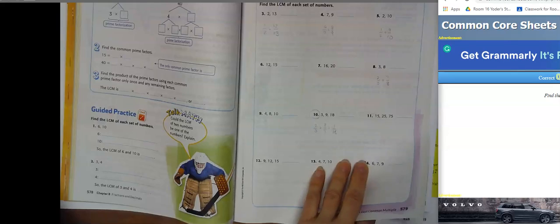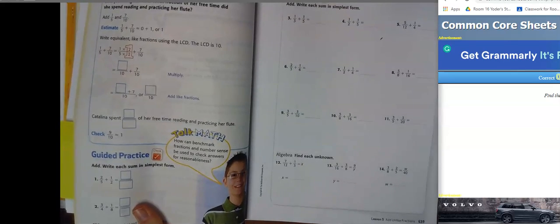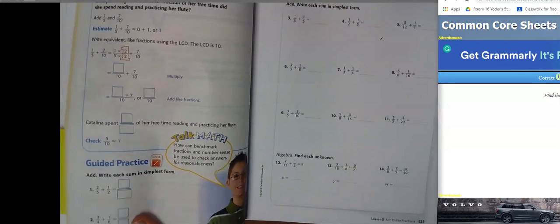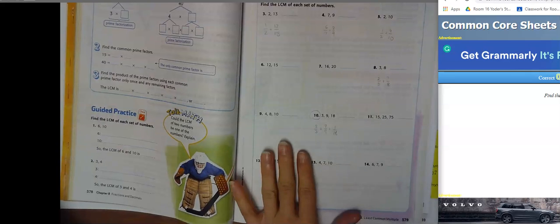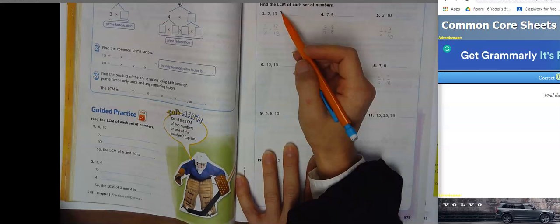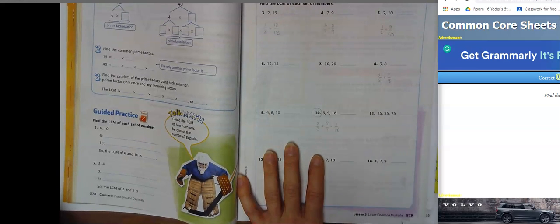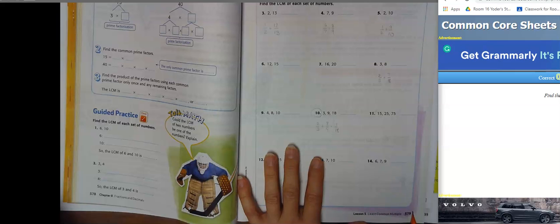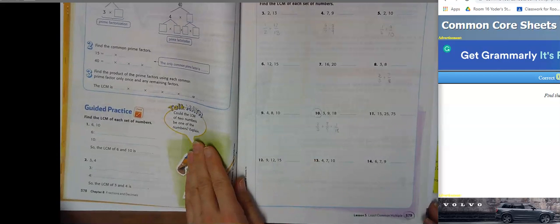So now that we've practiced with adding and subtracting fractions, we're going to continue practicing with them, but we're going to use some of these ideas like least common multiple. For today, we're starting on page 579. You will want to turn to that page and follow along as we go.